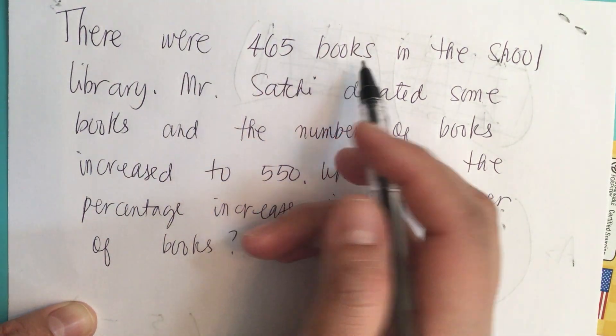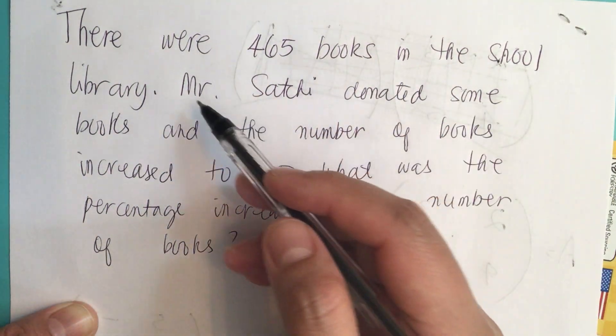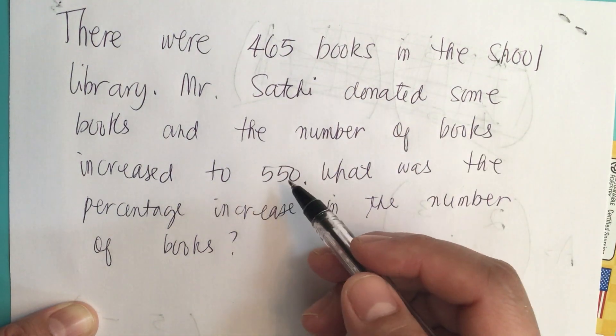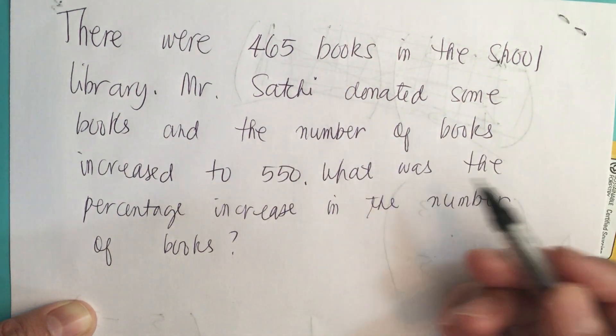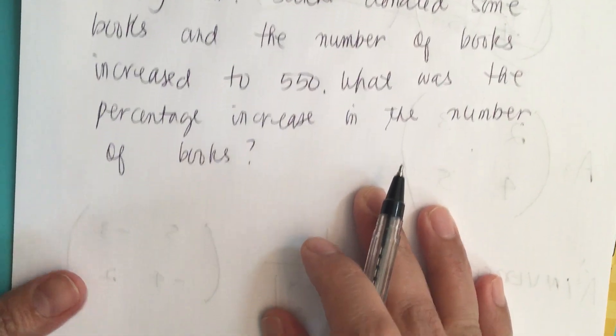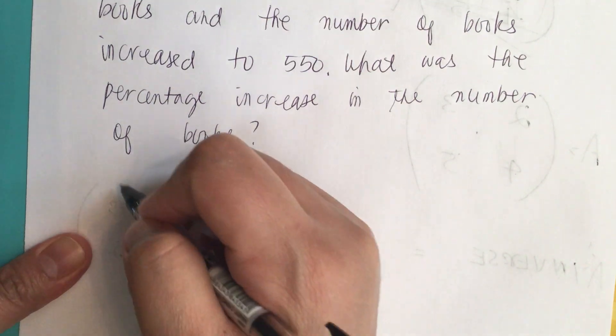There were 465 books in the school library. Mr. Sachet donated some books and the number of books increased to 550. What was the percentage increase in the number of books? This is a percent change problem.